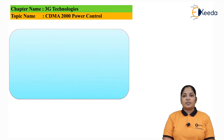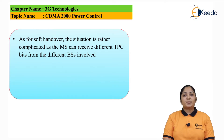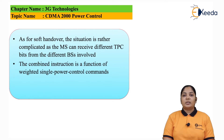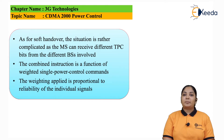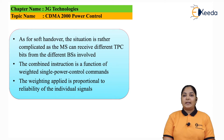This depends on the need of the mobile station. For soft hand-off, the situation is very complicated as the mobile station starts to receive bits from different nearby base stations. Hence, there is a combined instruction formed, which is a function of the weighted single power control command. This weighting is applied proportional to the reliability of the individual signal — meaning depending on which base station is more appropriate for the mobile station, power weights are applied accordingly. In the UMTS standard, a specific algorithm is designed to determine the mean of all the power controls from the different base stations. Depending on the mean, the power level will be either increased or decreased.